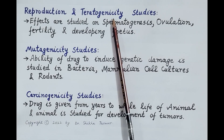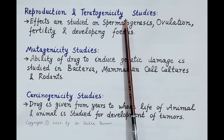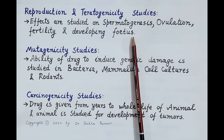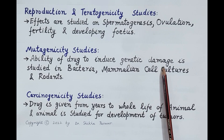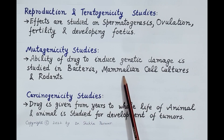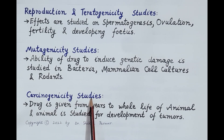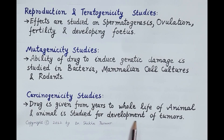Other studies performed during preclinical evaluation include reproduction and teratogenicity studies, where effects of the investigational drug on spermatogenesis, ovulation, fertility, and the developing fetus are studied. Mutagenicity studies examine the ability of the drug to induce genetic damage in bacteria, mammalian cell cultures, and rodents. Carcinogenicity studies are performed to find out if the investigational drug can produce tumors; the drug is given for long periods — years to the whole life of the animal — and the animal is studied for tumor development.